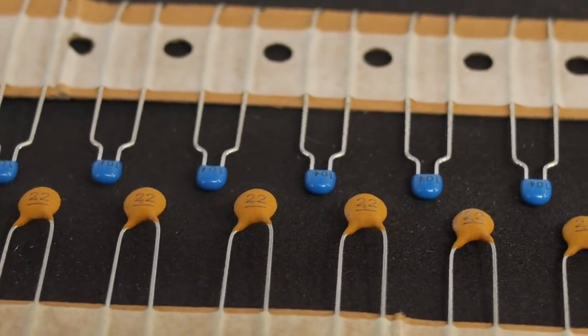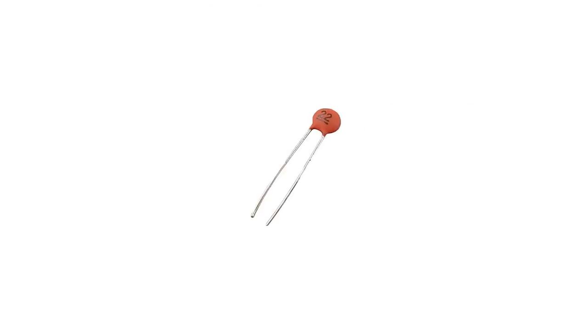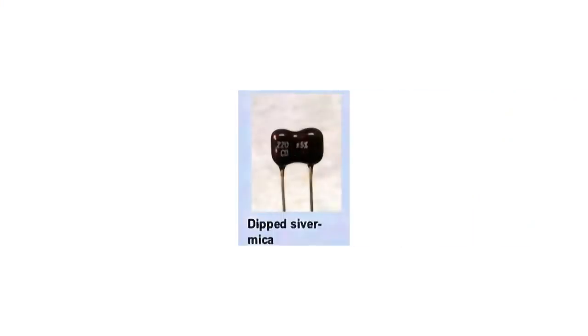Non-polarized capacitors are like resistors in that they can be placed in a circuit in either orientation. Non-polarized capacitors include ceramic disc, monolithic ceramic, silver mica, mylar, and film capacitors.